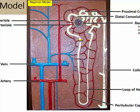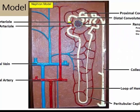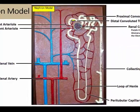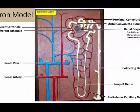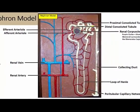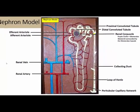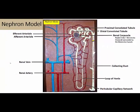Once it goes through this curve, it is now in the distal convoluted tubule. This last part that it passes through would be called the collecting duct.